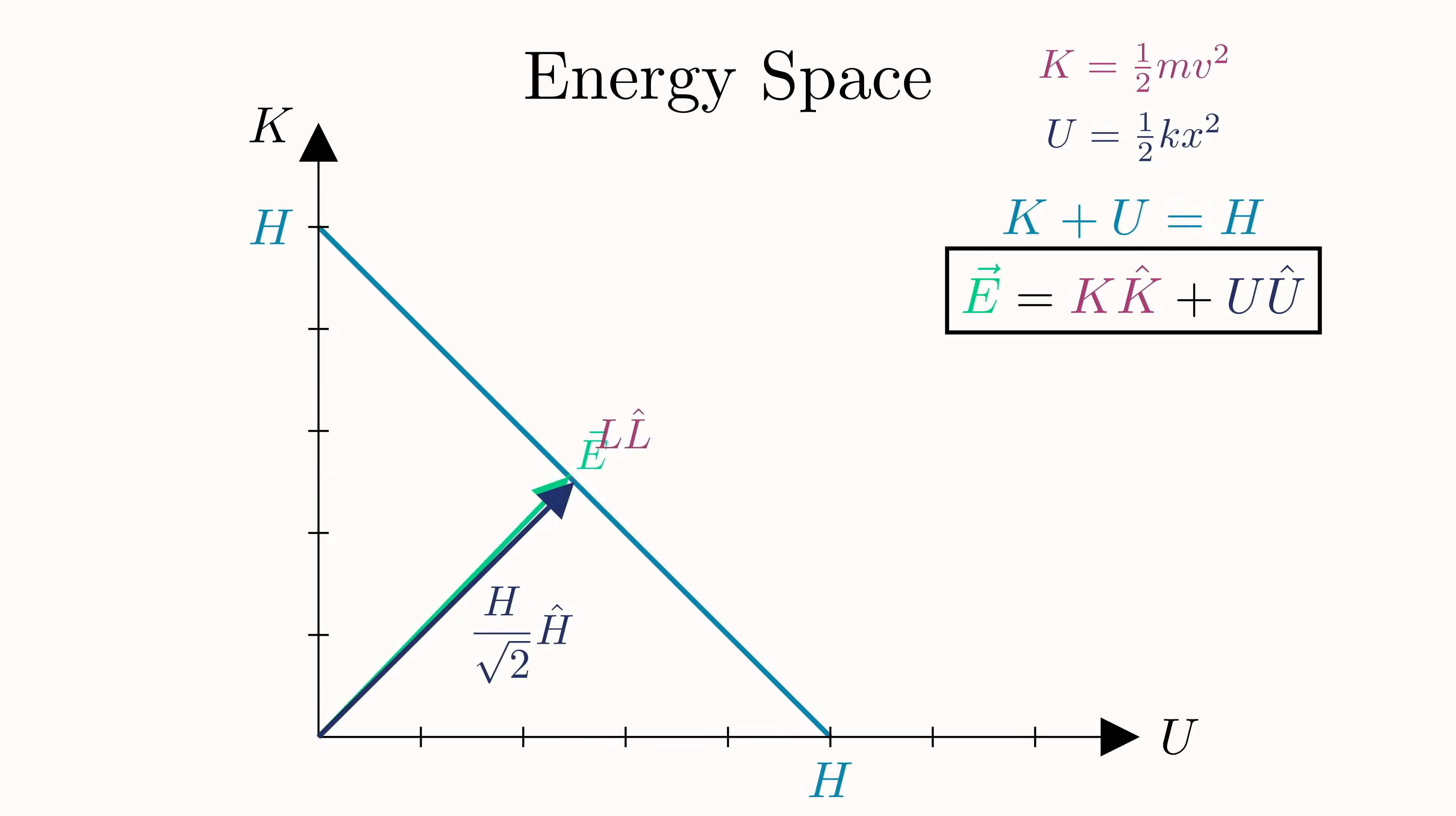And since l-hat and h-hat are linearly independent, this means that they also can form a different basis for this 2d energy space. So we can equivalently express e as h over the square root of 2 units in the h-hat direction plus l units in the l-hat direction.